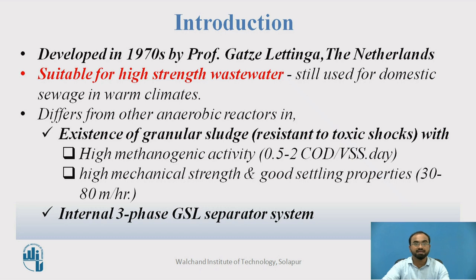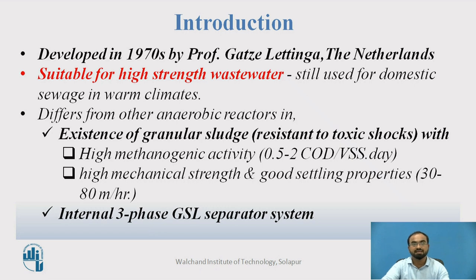It also differs from other anaerobic reactors. First, the existence of granular sludge that is resistant to toxic shocks, which has very high methanogenic activity — that is 0.5 to 2 kg COD per VSS per day — or high mechanical strength, or good settling properties, that is 30 to 80 meters per hour. Such a system will always provide the highest amount of anaerobic digestion relative to normal anaerobic digestion. It also has an internal three-phase GSL separator system, that is gas, solids, and liquid separator system. By combining these two features, UASB is normally considered much superior for anaerobic treatment.